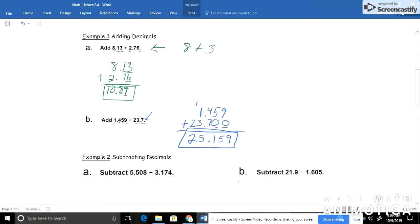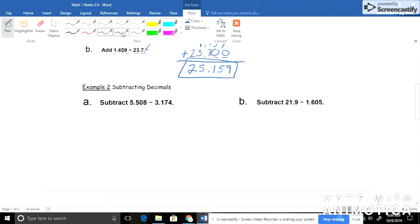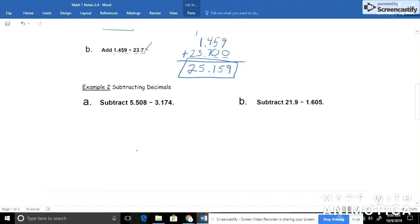Let's continue with example 2 and subtracting. And these are actually very similar and follow the same set of rules. So it says subtract 5.508 minus 3.174. Again, these two numbers are kind of nice because they have the same number of digits in their place values. So 1, 2, 3, 4. 1, 2, 3, 4. Kind of easy to deal with this one. We don't need to add zeros. We don't need to line up our decimals really. They line up naturally for us, which is kind of nice.